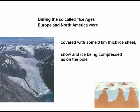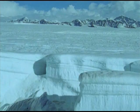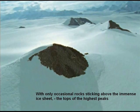During the Ice Ages, Europe and North America were covered with some 3 km of ice sheet, snow and ice being compressed as on the poles, with only occasional rocks sticking above the immense ice sheet — the tops of the highest peaks.